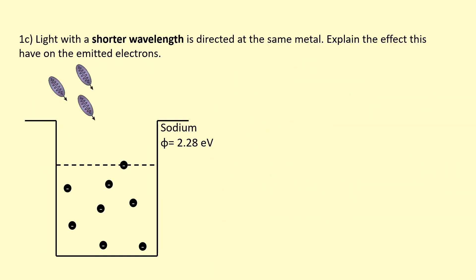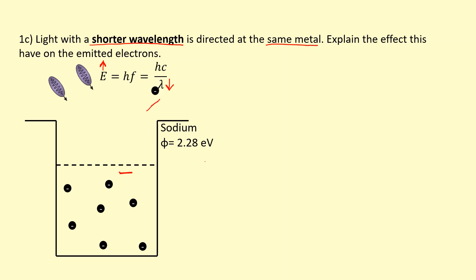In this question, we're directing light with a shorter wavelength at the same metal, and we're asked to explain the effect on the emitted electrons. If we're using a shorter wavelength, that means the frequency is higher and the energy of each photon will be larger — for example, using violet photons instead of blue. The electron near the surface still uses the work function 2.28 electron volts to escape, so it comes out with a higher maximum kinetic energy because each photon supplied it with more energy. If each photon provides larger energy and the work function is unchanged, the maximum kinetic energy will be larger and electrons come out faster.